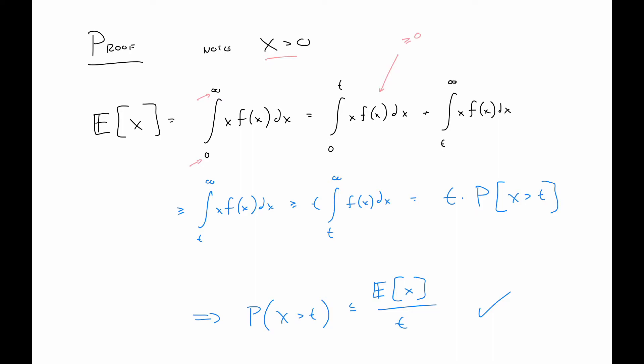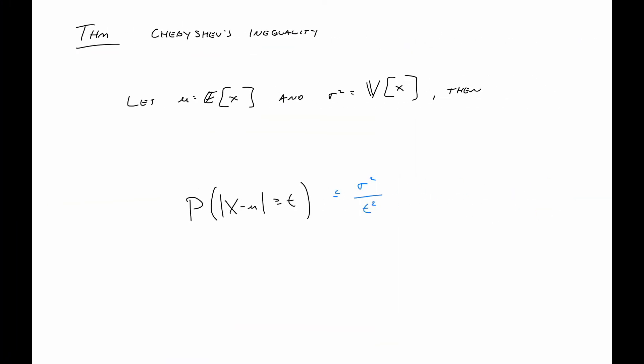Next up we have Chebyshev's inequality. Just a minor note here, you might see Chebyshev's spelled different ways, perhaps even starting with a T instead of a C, and that's because the alphabet we're using here does not have a one-to-one relationship with the original Russian that this name was written in. Very similar setup to Markov's, but now we have this added condition that we have a variance sigma squared.